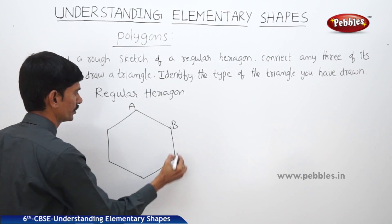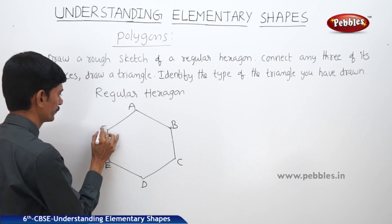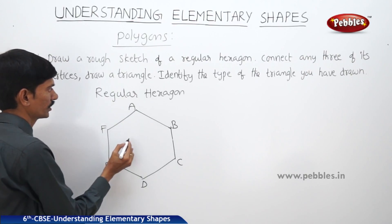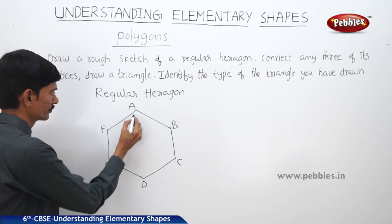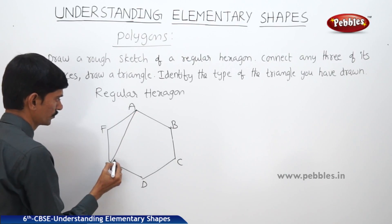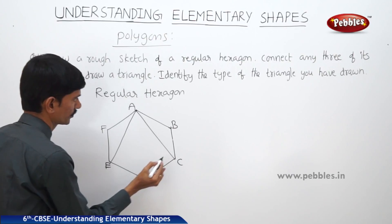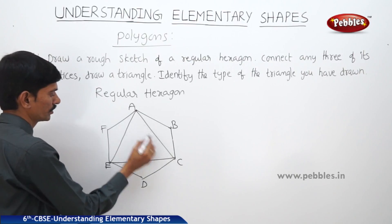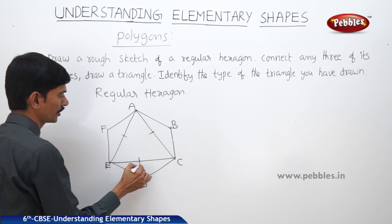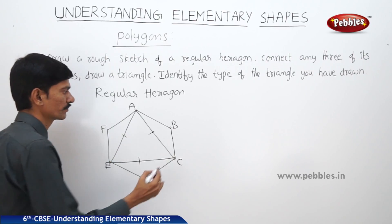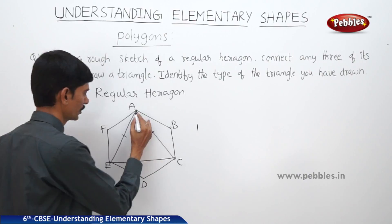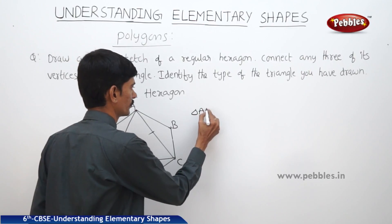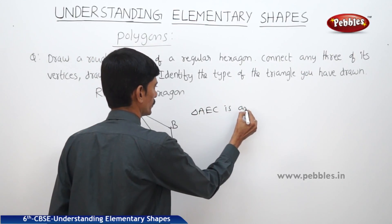So this is a regular hexagon — vertices A, B, C, D, E, F. Now connect any three of its vertices. Let us connect A to E, then AC, and then EC. So here A, E, and C — the three sides are of equal length, so triangle AEC is an equilateral triangle.